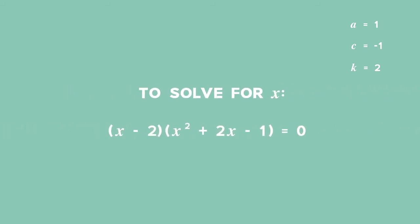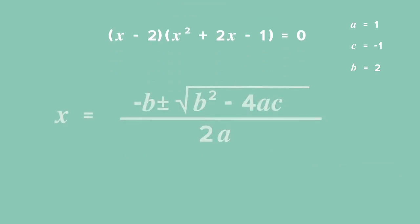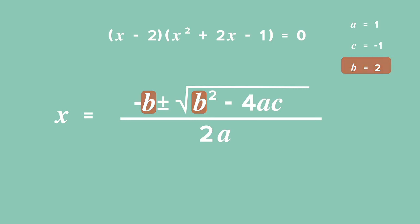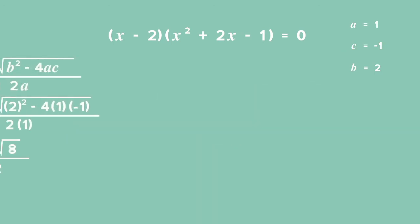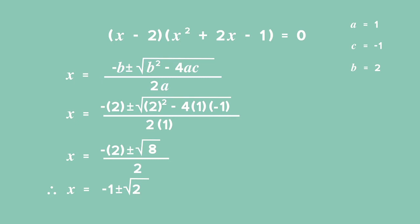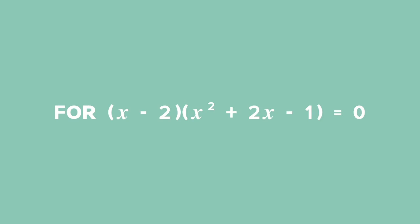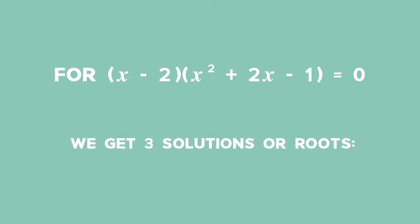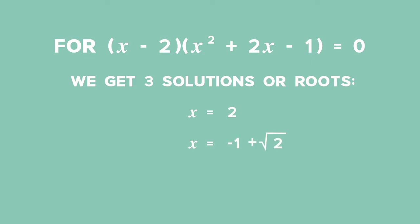To solve for x, we must completely factorize f of x, hence we need to factorize x squared plus 2 times x minus 1. We use the quadratic formula, as there are no rational factors for this trinomial. Substituting a with positive 1, b with positive 2, and c with negative 1, we obtain two solutions: x equals negative 1 plus the square root of 2, and x equals negative 1 minus the square root of 2. For our equation x minus 2 times x squared plus 2 times x minus 1 equals 0, we get three roots: x equals 2, x equals negative 1 plus the square root of 2, or x equals negative 1 minus the square root of 2.